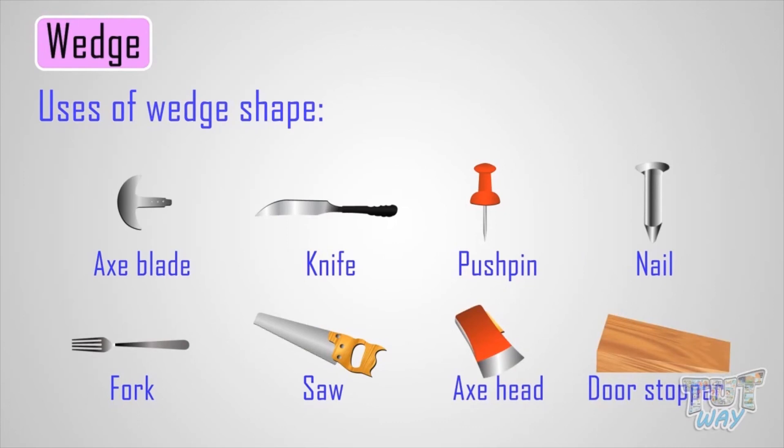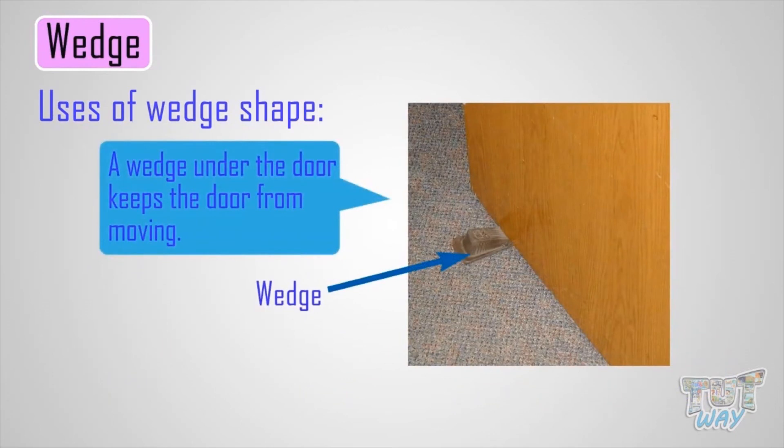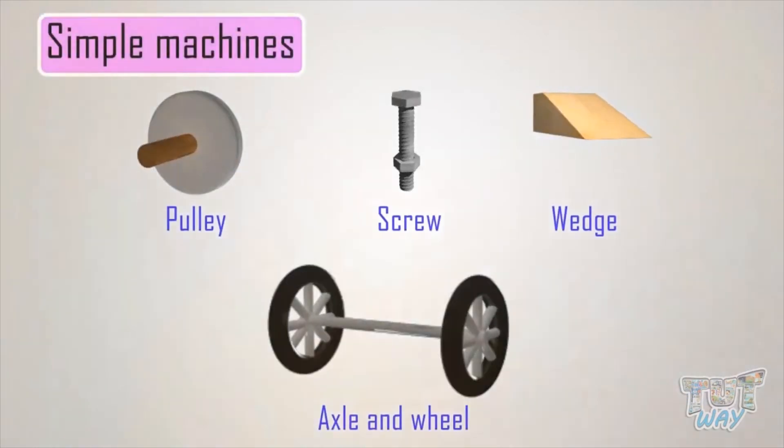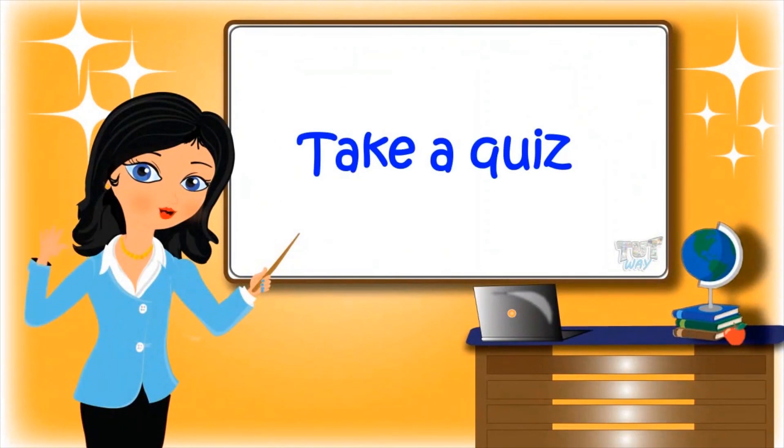A nail secures things. A wedge under a door keeps the door from moving. So kids, now we learned about many types of simple machines. Now go ahead and take a quiz to learn more! Bye-bye!